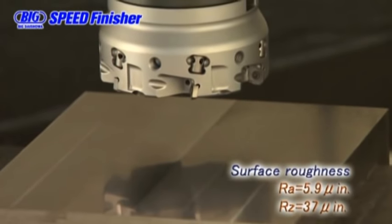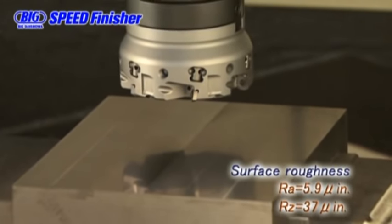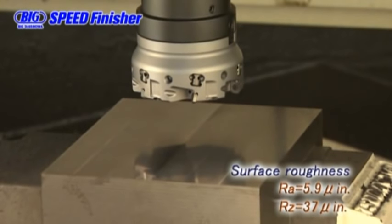The surface roughness is 5.9 micro inches Ra and Rz is 37 micro inches. It achieves an excellent surface finish for cast iron.